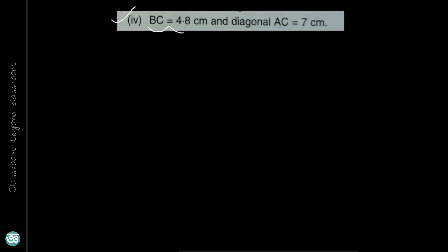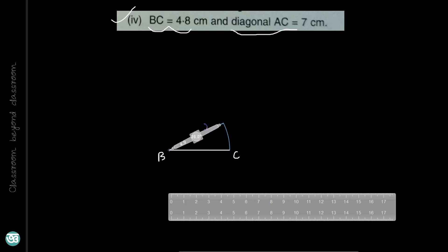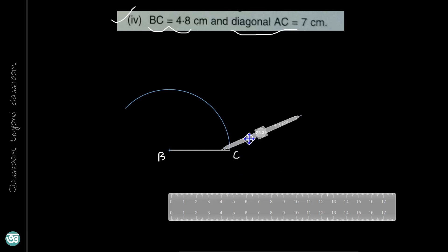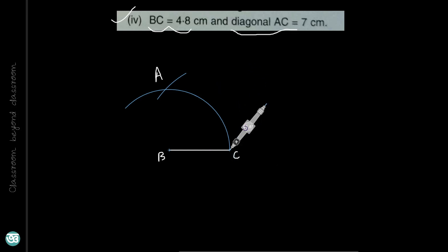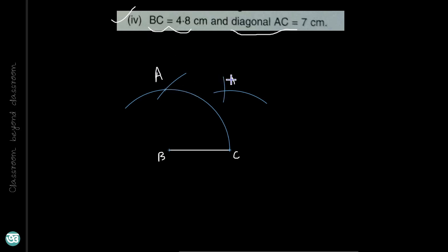Next, BC is equal to 4.8 cm and diagonal AC is 7 cm. Draw an arc equal to BC, then take AC equal to 7 cm. Take C as center and cut the arc to find point A. To locate point D, take C as center with radius 4.8 cm, then take A as center with the same radius. Join points AD, DC, and AB. This is rhombus ABCD with diagonal AC equal to 7 cm and sides 4.8 cm.